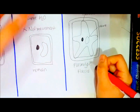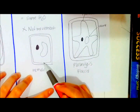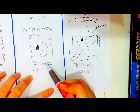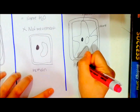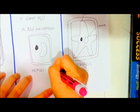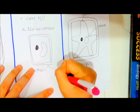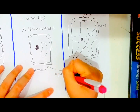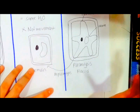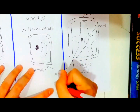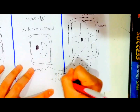If you want the cell to return to its actual shape, this process is known as deplasmolysis. What you need to do is immerse it in distilled water.